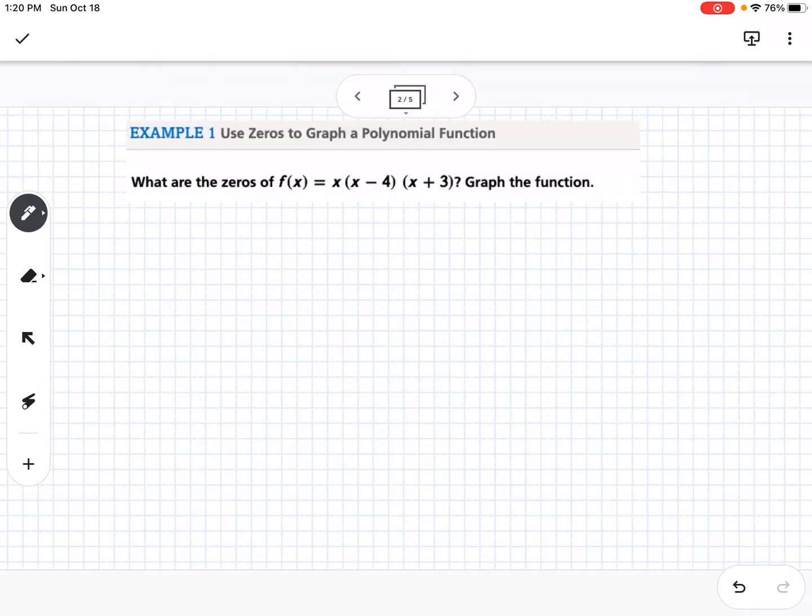Our first example says, what are the zeros of f(x) equals x times x minus 4 times x plus 3, and then we're going to graph the function. So first of all, the zeros using the zero product property is what's going to make each of the factors equal zero. So first we have just an x by itself, so that means that zero would be a zero. Then we have x minus 4, so what number would make that equal zero? That would be positive 4. And then finally we have x plus 3, so the zero would be negative 3.